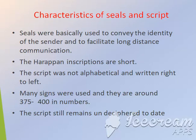The Harappan inscriptions are short. The script was not alphabetical and was written from right to left, with approximately 375 to 400 signs. What is very important is that up to date, nobody has deciphered the Harappan script.